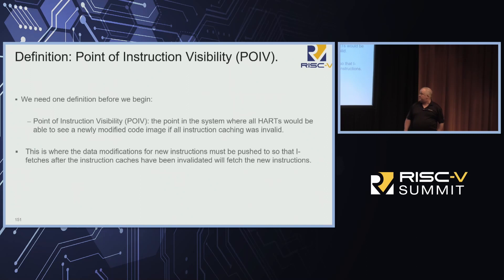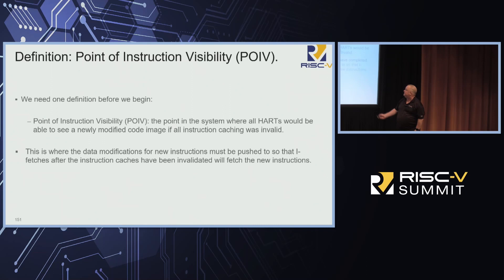Before we begin we need to talk about something called the Point of Instruction Visibility — for ARM people that's called the Point of Unification. That's the place where you've got to take your modified data, your new instructions, and push it to so that all the I-fetchers will now see it once we clear the I-caches.